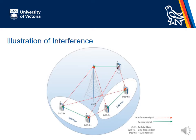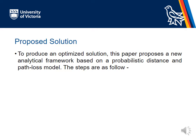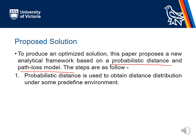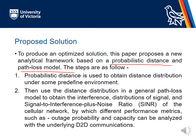To produce an optimized solution, this paper proposes a new analytical framework based on a probabilistic distance and path loss model. First, probabilistic distance is used to obtain the distance distribution under a predefined environment. Then, the distance distribution is used in a general path loss model to obtain the interference distribution and the signal-to-interference-plus-noise ratio (SINR) of the cellular network, from which network performance metrics such as outage probability and capacity can be analyzed alongside the underlying D2D communication.